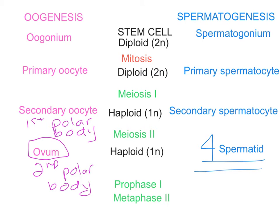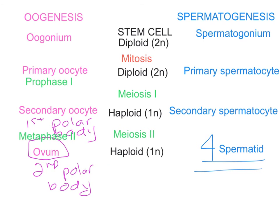One more thing to look at in oogenesis is timing. During fetal development, the oogonium undergoes mitosis to produce the primary oocyte. However, when it starts into meiosis, it gets arrested at prophase I. So a female is born with all the primary oocytes that she will have, all arrested in prophase I. At puberty, the secondary oocyte is going to be formed through meiosis I every month. However, it also gets halted at metaphase II. The secondary oocyte remains at metaphase II every month unless there is fertilization, at which point meiosis II will continue and you will get the development of the ovum.